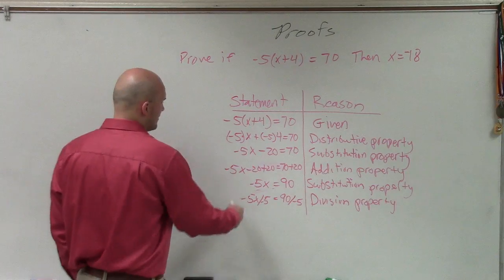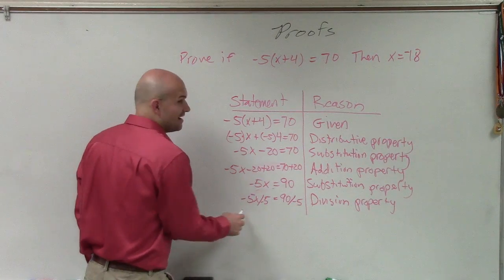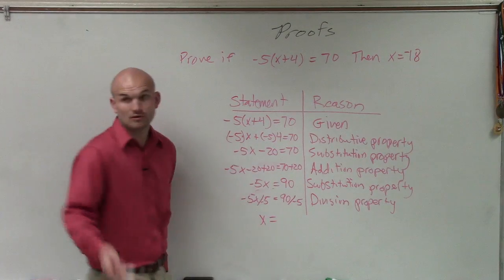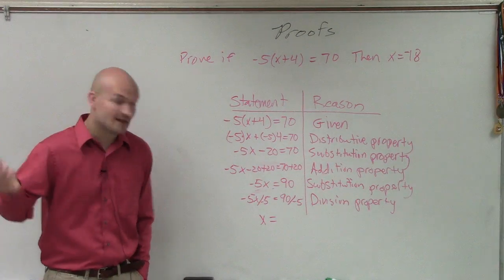Therefore, now I finally have negative 5x divided by negative 5, which is going to be x, equals negative 18.